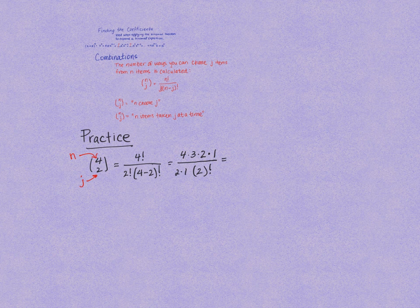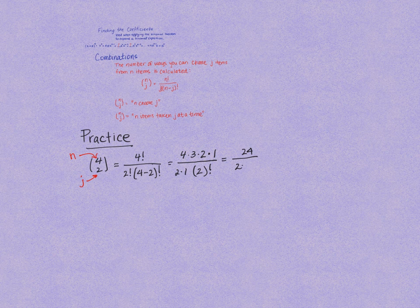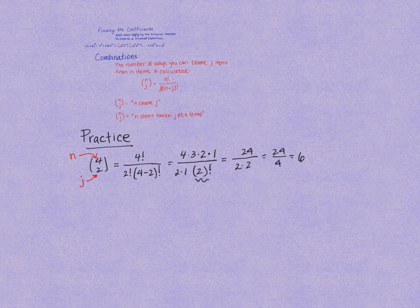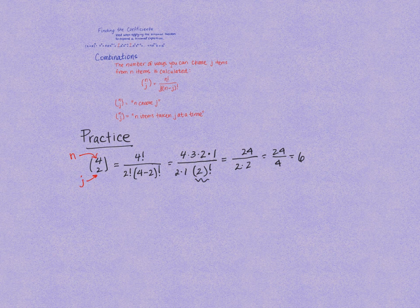In the numerator we get 24. In the denominator we have 2 times, and then this 2 factorial is also 2 because it's 2 times 1. So this becomes 24 over 4, which reduces perfectly to 6. In other words, there are 6 ways of choosing 2 items out of 4 items.